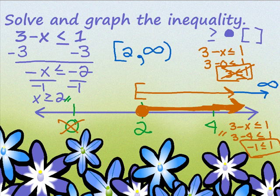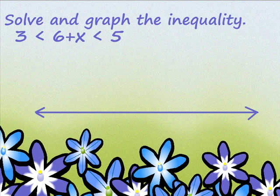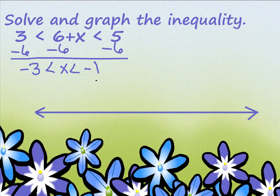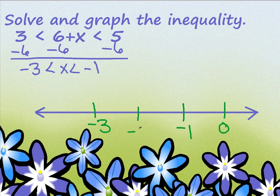Let's try one more — solve and graph the inequality. We're going to solve this just as if these were equal signs. I'm going to subtract 6 from every part: 3 minus 6 is negative 3, which is less than x, which is less than negative 1. So the important numbers are negative 3 and negative 1. Let's put those on the number line. Until you get good at this, put numbers to the right of negative 1, between negative 1 and negative 3, and to the left of negative 3.